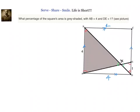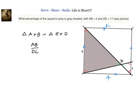If we call the intersection point X, then triangle AXB is similar to triangle EXD. This means that AB divided by DE gives us corresponding sides in the ratio of 4 to 1.